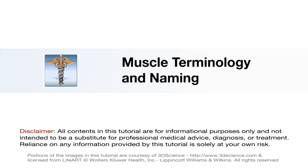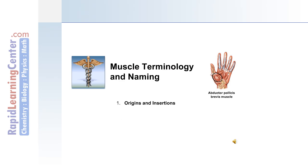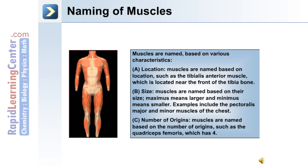Now let's move on to discuss muscle terminology and the naming of muscles. We'll discuss origins and insertions of muscles, actions, and muscle terms. The naming of muscles is based on various characteristics, including the location of the muscle, the size of the muscle, and the number of origins the muscle has.